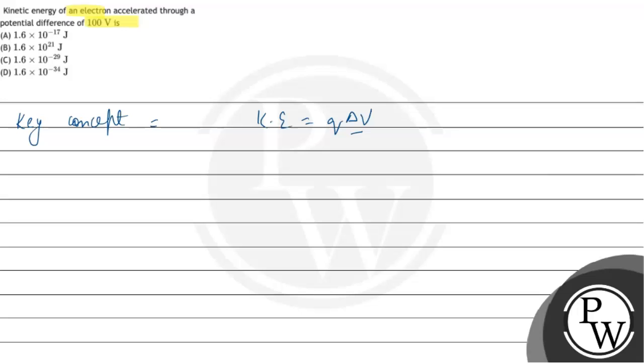Delta V is the potential difference, and here delta V is what is given? 100 volt.